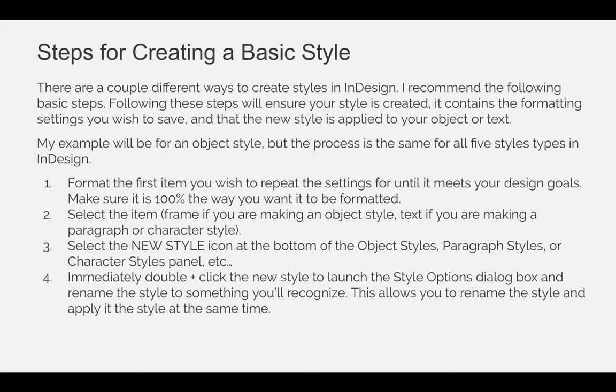Once you create the new style, it's created based on what's selected, but it's not linked to what you have selected — it's separate. So you must immediately double-click the new style to launch the style options dialog box. By doing this you: one, apply the style to the object that's actually selected, and two, you can rename the style to something meaningful — like 'body copy paragraph style' or 'graphic frames object style' — rather than 'new paragraph style 1'.